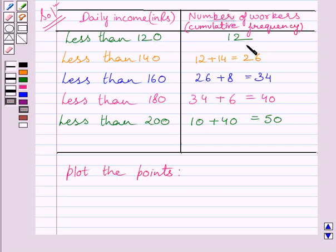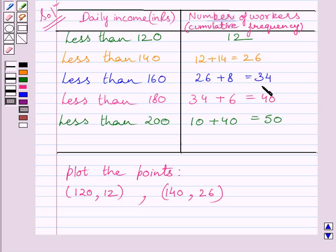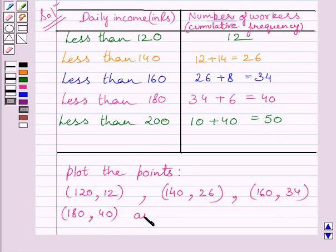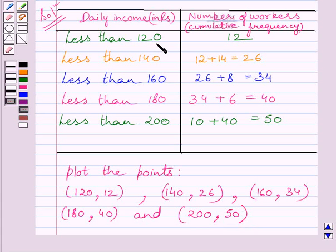We will plot the points (120, 12), (140, 26), (160, 34), (180, 40), and (200, 50) on the graph. To draw an ogive, we always plot the points corresponding to ordered pairs given by upper limit and cumulative frequency. Let us now plot all the points on the graph.